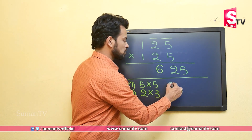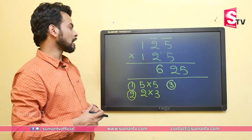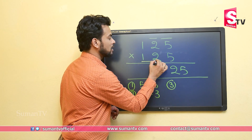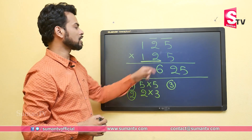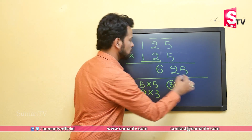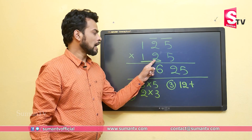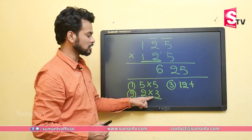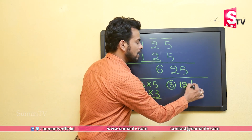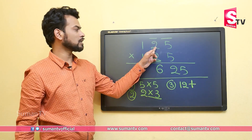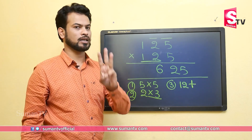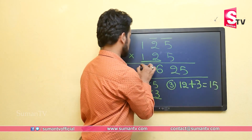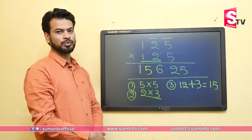Now a new third step will come. In the third step, because this is a 3-digit number, we take the tens and hundreds digits together — that is 12. Then we add the successor of the tens digit: 2's successor is 3, so 12 plus 3 equals 15. So the final answer is: 1, 5, 6, 2, 5 — that is 15625.